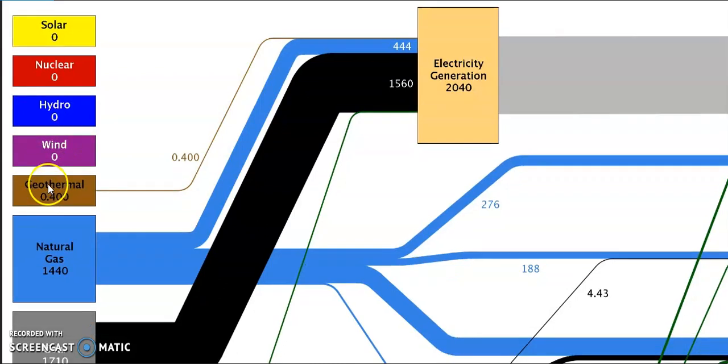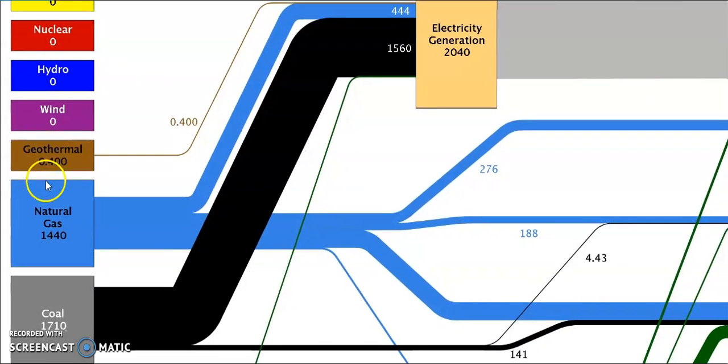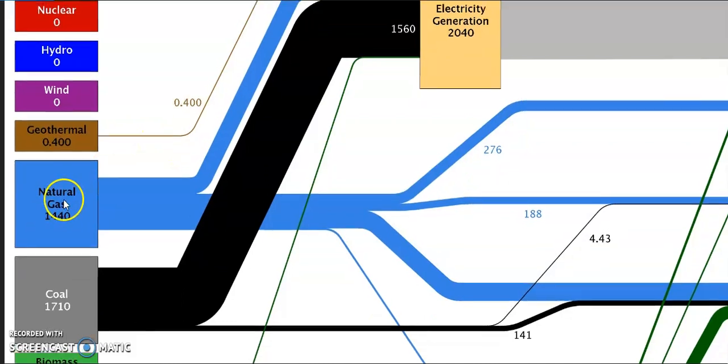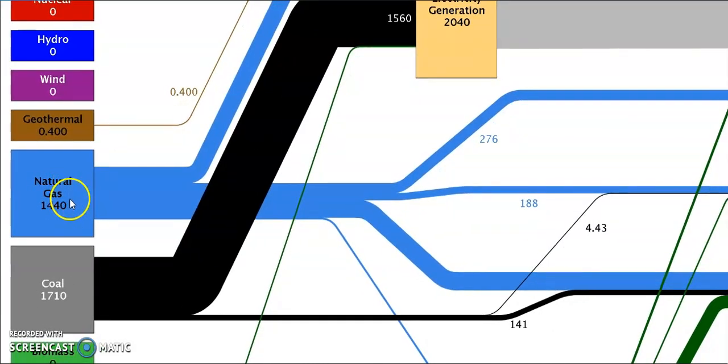For geothermal there is a very nominal carbon emission, that is 0.4 million metric tons. And for natural gas there is a carbon emission of 1,440 million metric tons.